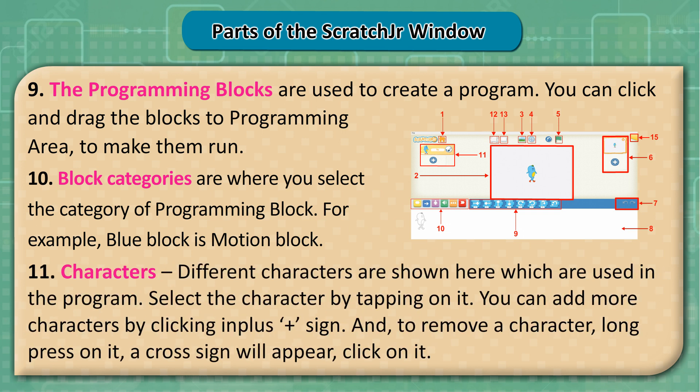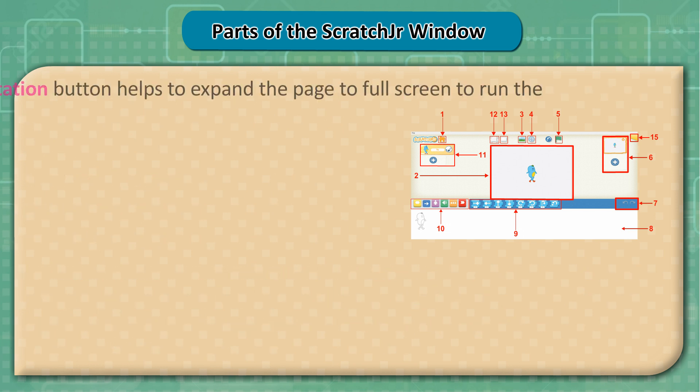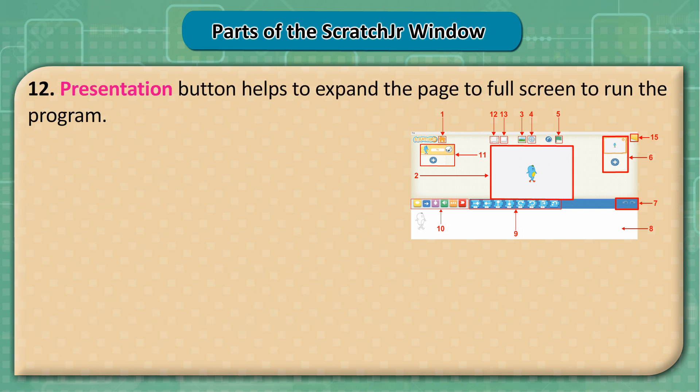10. Block categories are where you select the category of programming block. 11. Characters: Different characters are shown here which are used in the program. Select the character by tapping on it. You can add more characters by clicking the plus sign, and to remove a character, long press on it. A cross sign will appear — click on it.